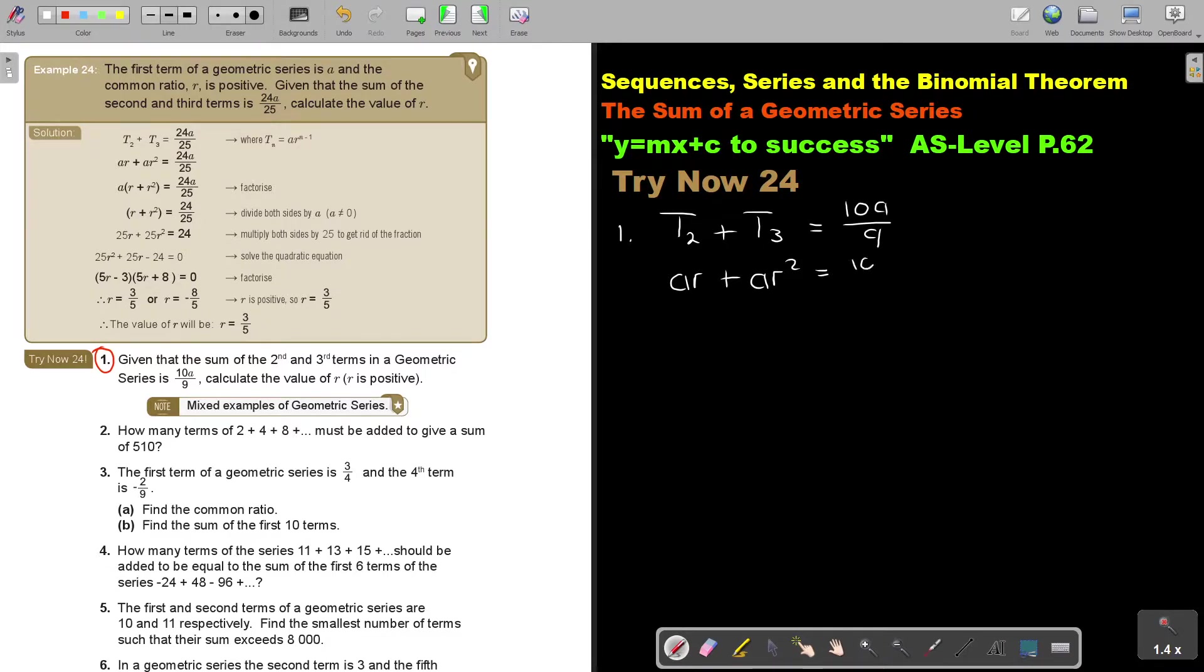Remember, the second term is AR and the third term is AR squared. And it's 10A over 9. So what do I do? I take AR as a common factor. It's always nice if you see an example because then it's so easy just to follow the pattern. So I divide by A.